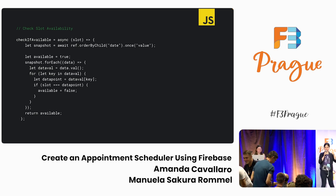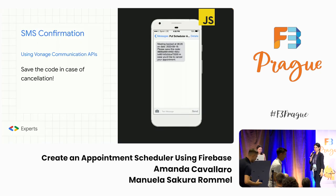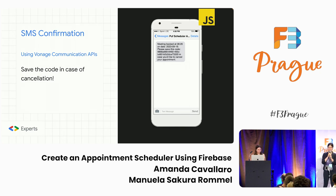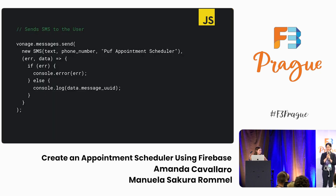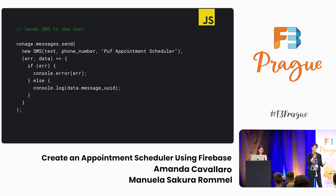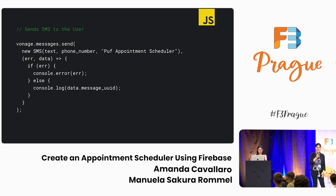Once we've checked availability and it's available, we add it to the database. At the same time, we send an SMS message using the Vonage API to the phone number added from the web app or the Flutter app. That message contains the time, the date, and a code in case the person wants to delete it later. That's how you use the Vonage API to send an SMS — just a few lines of code. With the same API, you could also send WhatsApp messages or Facebook/Meta Messenger — just a few more lines of code using the same API.